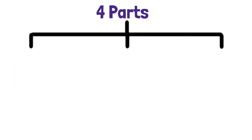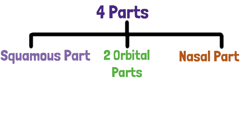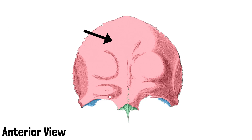The frontal bone can be divided into 4 parts, which include the squamous part, two orbital parts, and the nasal part. We will discuss each of these parts separately and see what anatomical features they possess.